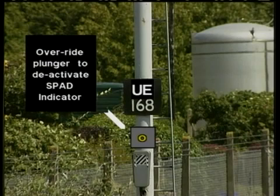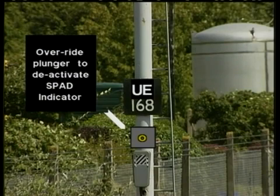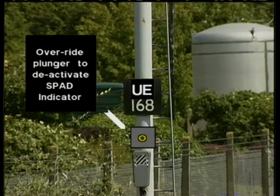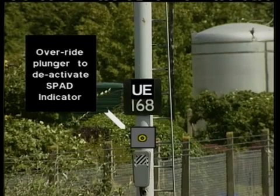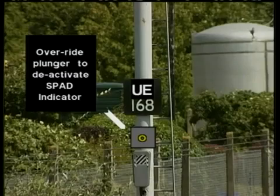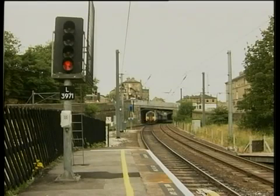Some stop signals provided with SPAD indicators will be fitted with override plungers, so that when authority is given to pass the signal at danger, the driver or hand signalman can depress the plunger to deactivate the SPAD indicator for the authorised movement. The override will be operative for that movement only. In all cases, the SPAD indicator apparatus will reset after the passage of the train.